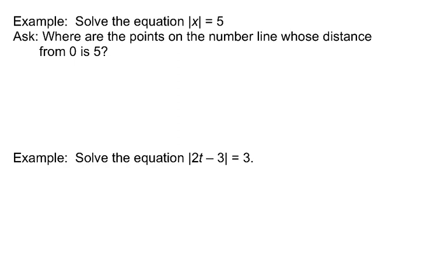So what happens when we have an equation that involves absolute value? I've got a variable x in here. Solve the equation absolute value of x equals 5. If we focus on the fact that the absolute value of x represents the distance between x, whatever that is, and 0, we're really asking the question, where are the points on the number line whose distance from 0 is 5?